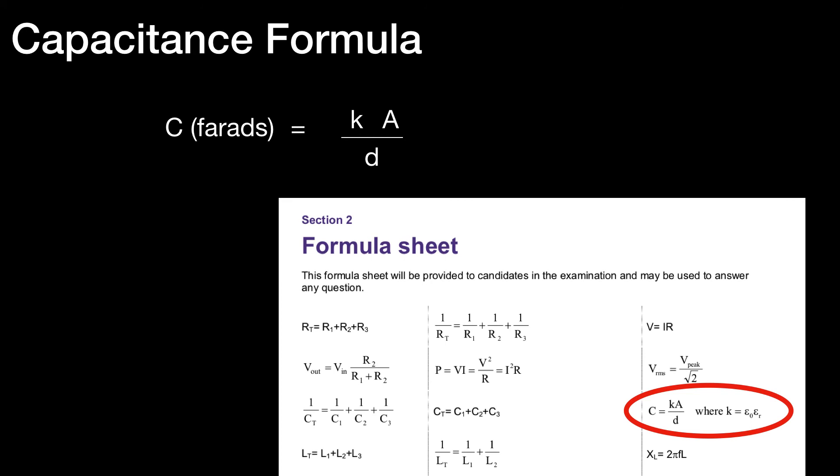Here it is. C equals small Ka over D, where K equals epsilon 0 times epsilon R. And you recall from the previous slide that epsilon 0 is the permittivity of free space, and epsilon R is the relative permittivity of the dielectric in the capacitor that we're considering.